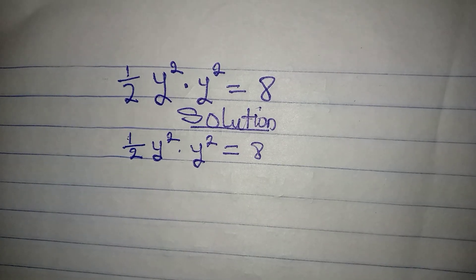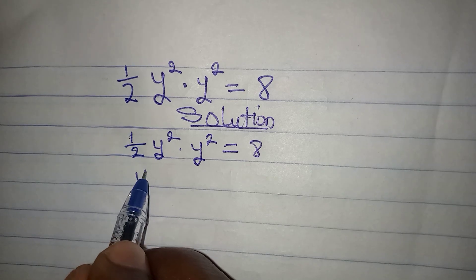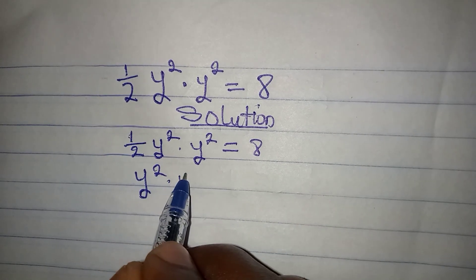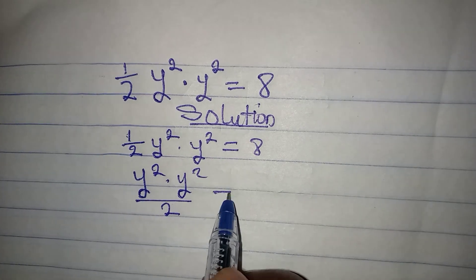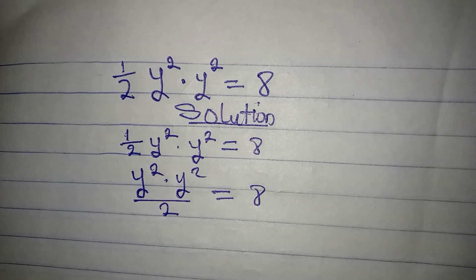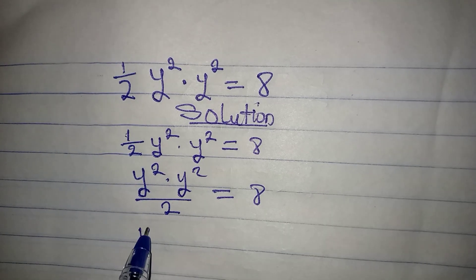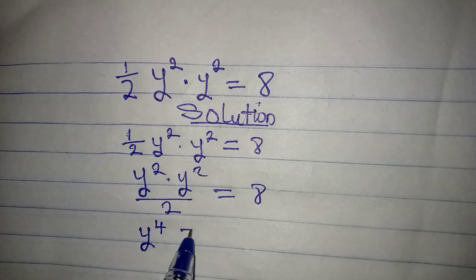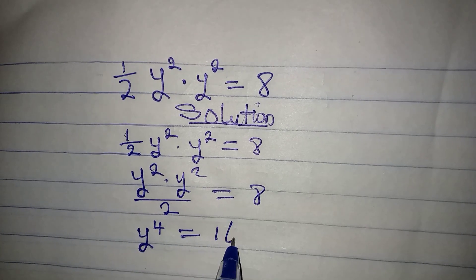To find the solution to this problem, you have to understand that this is the same thing as y squared times y squared over 2 being equal to 8. So y squared times y squared will give us y to the power of 4, and that will be equal to 2 times 8, which will give 16.